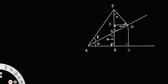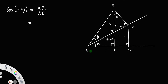Now, see this angle is 90. Consider cos(alpha + beta) — that is cos of angle A. Cos will be adjacent, that is AB by AE. So cos(alpha + beta) is equal to AB by AE. And AB is the difference of AC and BC, that is AB = AC minus BC. So AB by AE can be written as AC minus BC divided by AD, which is AC by AD minus BC by AD.